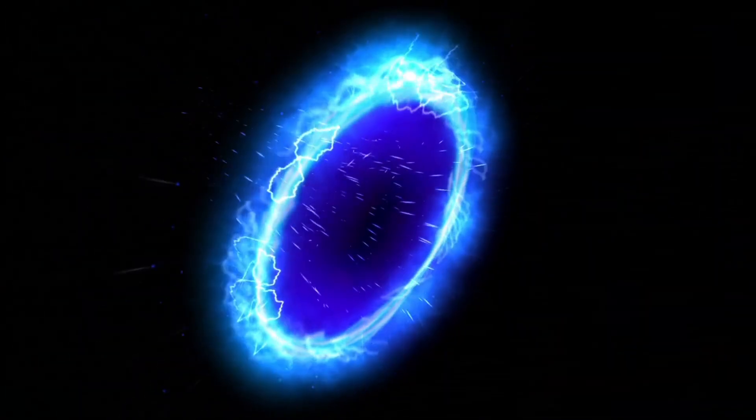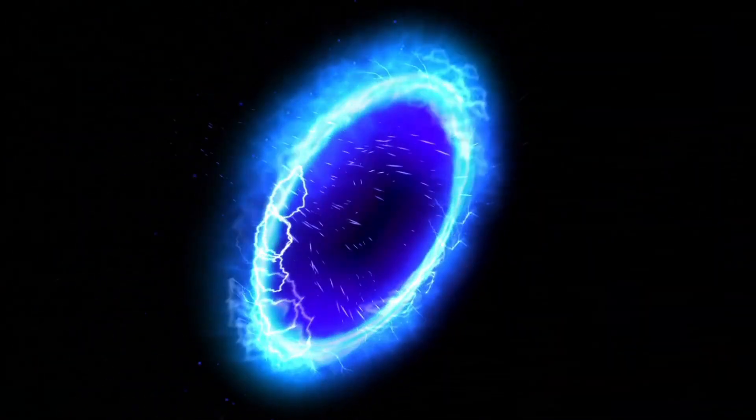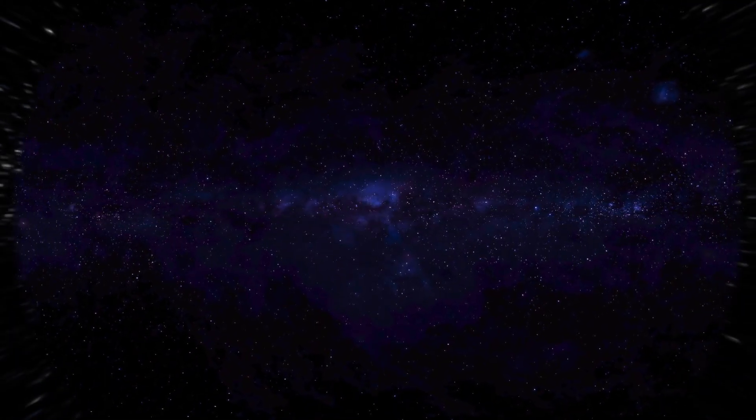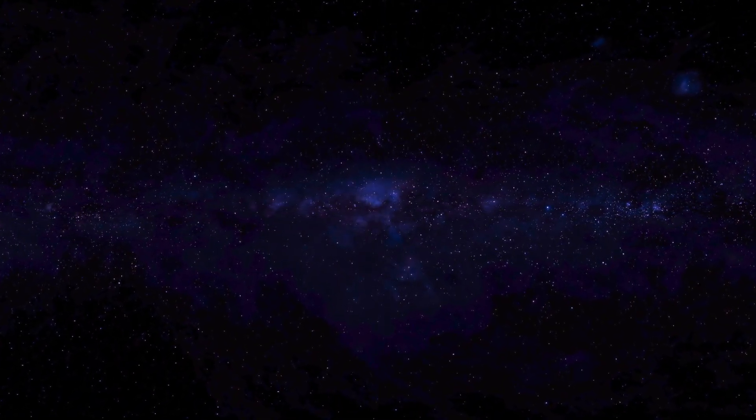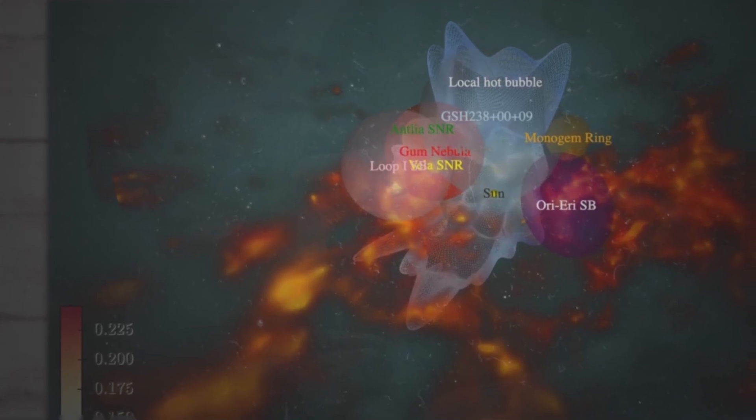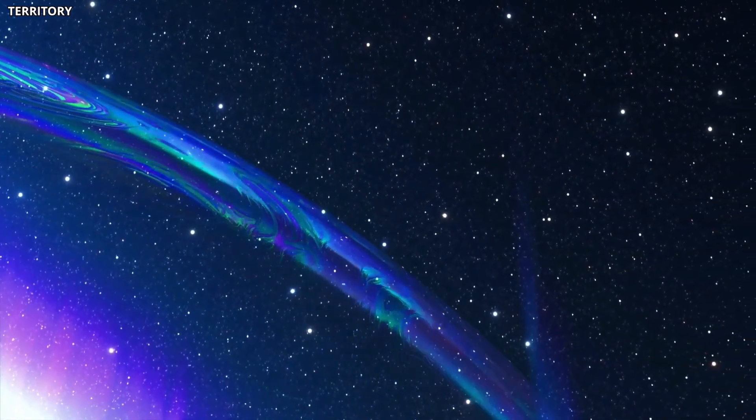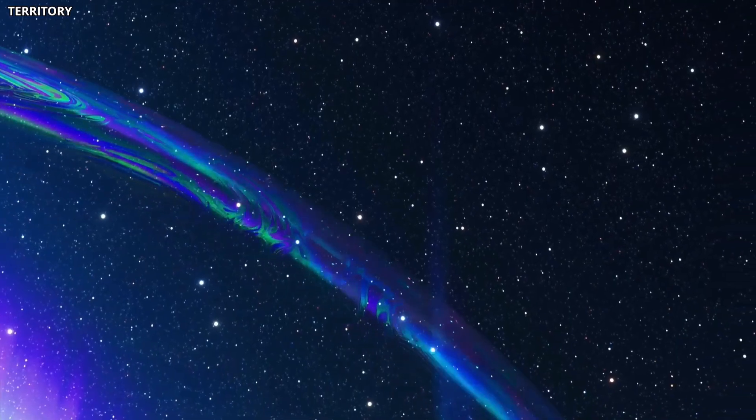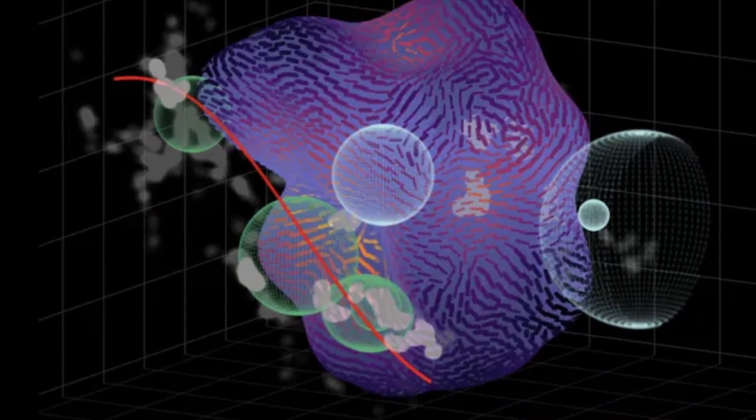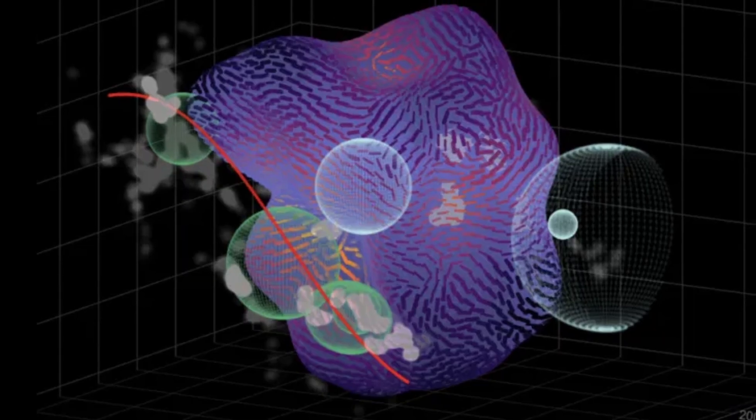Most of us have heard of wormholes, mysterious tunnels that scientists believe could allow travel between distant galaxies or regions of space. Recently, scientists mapping a 3D model of our galaxy made an astonishing discovery. They found what looks like an interstellar tunnel that seems to connect our solar system to another distant star system.